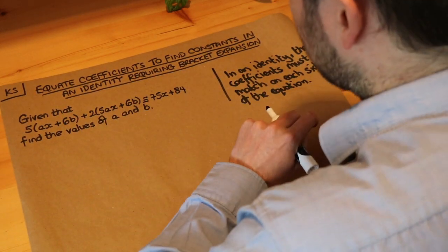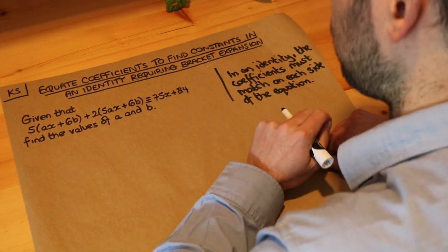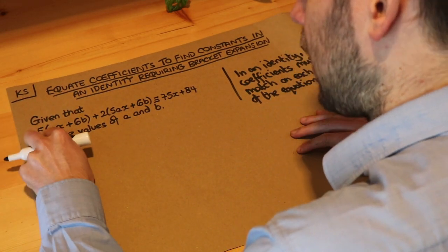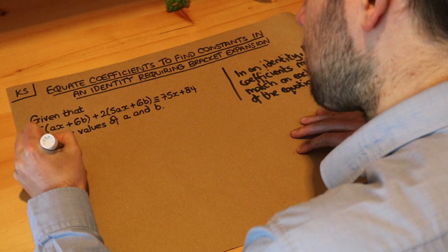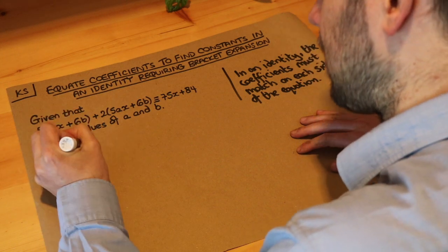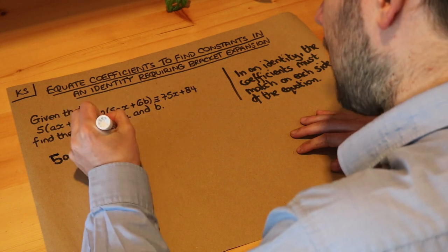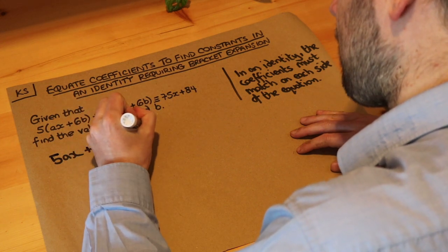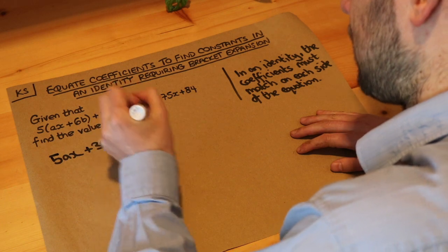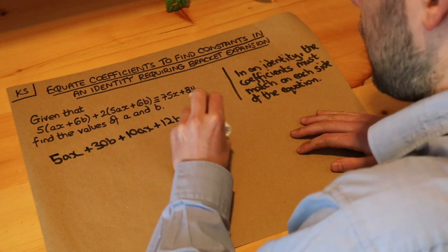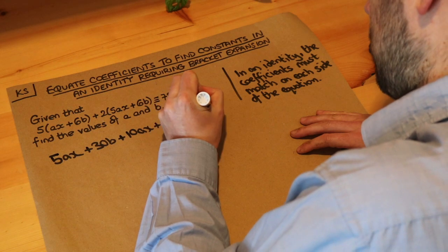Now the only difference of this question from the previous question is that we've got some brackets and all we need to do as per the title is just expand the brackets first. So if we do that, we've got 5 times the ax, we've got the 5 times the 6b which is 30b, we've got 2 times 5ax which is 10ax, we've got the 2 times the 6b which is 12b, and we've got the 75x plus 84.